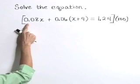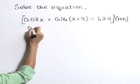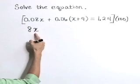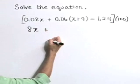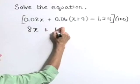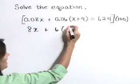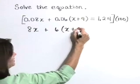So 100 times the 0.08 is 8, and let's take that times x. Plus 100 times the 0.06 is 6, let's take that times the quantity x plus 9.